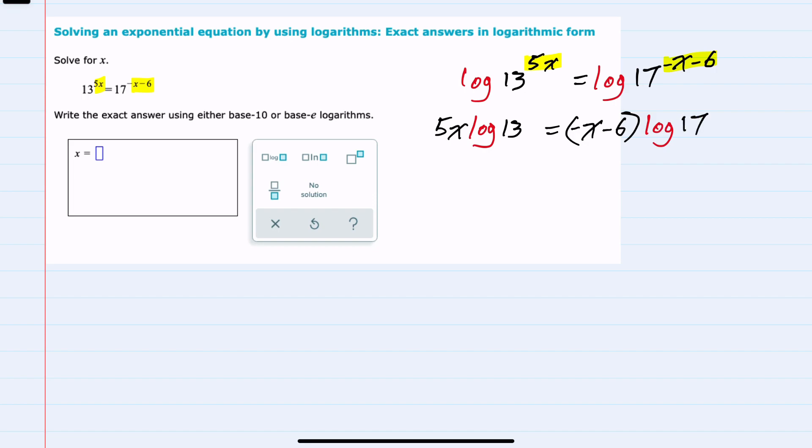To continue solving for x, we'll want to get rid of those parentheses on the right-hand side. And to do so, we'll distribute that log to give us negative x log 17, and then distributing to the second term, minus 6 log 17.